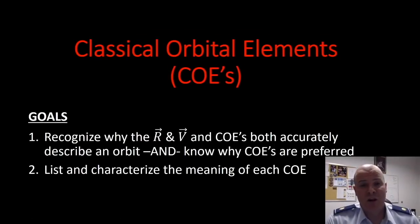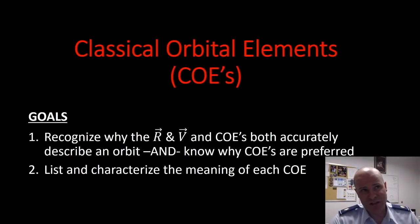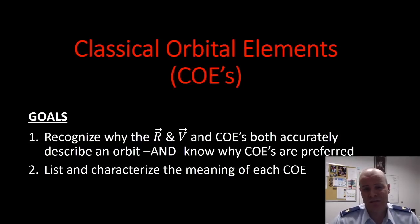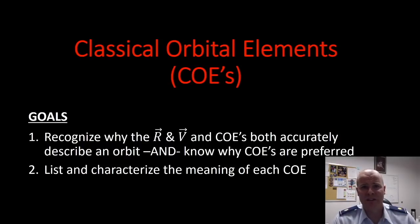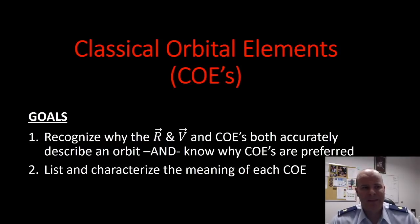Welcome to another installment of the Astro 310 video series. Today's video will be discussing the classical orbital elements, or COEs. We have two goals: the first is to recognize why the R and V vectors and COEs both accurately describe an orbit, and to know why COEs are preferred. And secondly, we're hoping to list and characterize the meaning of each COE.